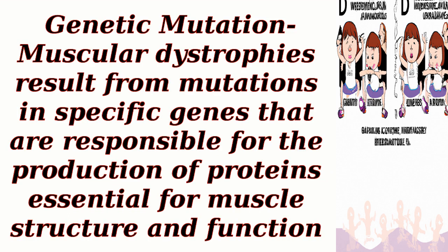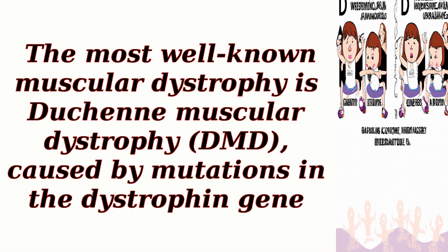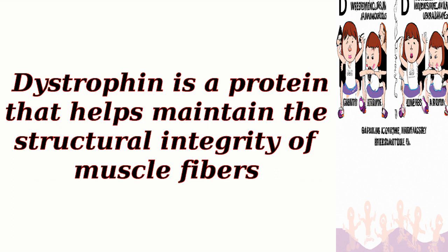Genetic mutation: muscular dystrophies result from mutations in specific genes that are responsible for the production of proteins essential for muscle structure and function. The most well-known muscular dystrophy is Duchenne muscular dystrophy (DMD), caused by mutations in the dystrophin gene. Dystrophin is a protein that helps maintain the structural integrity of muscle fibers.